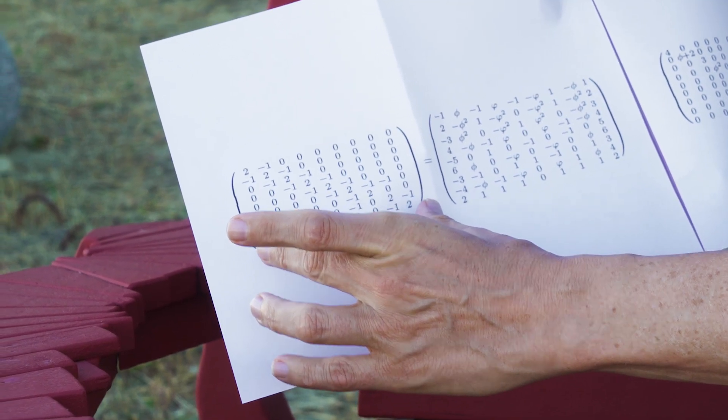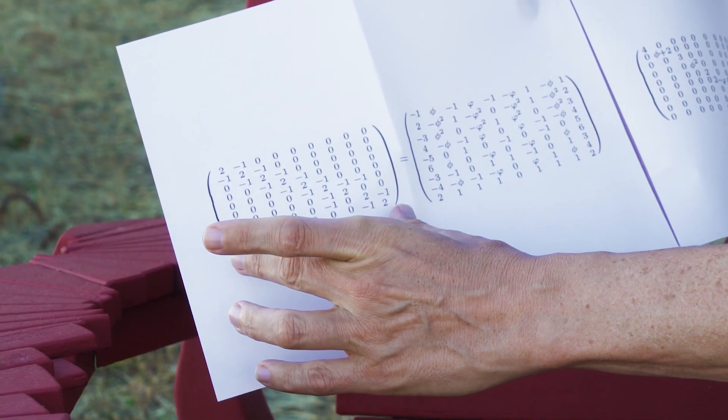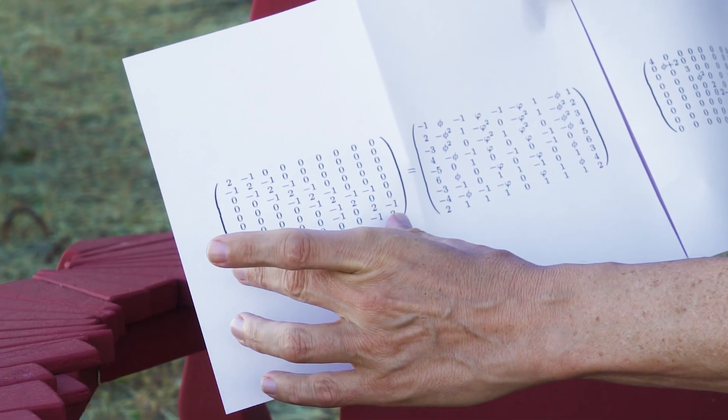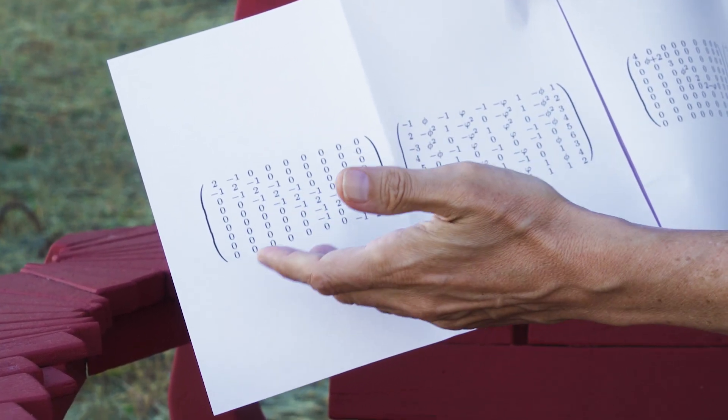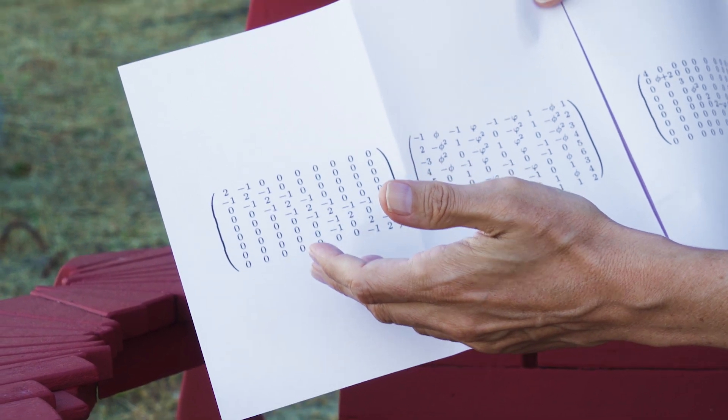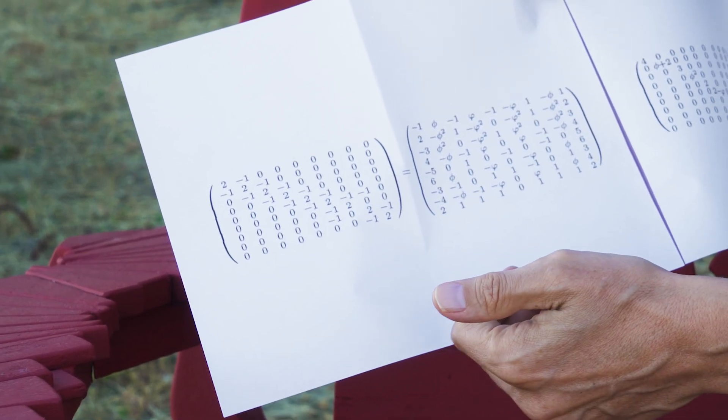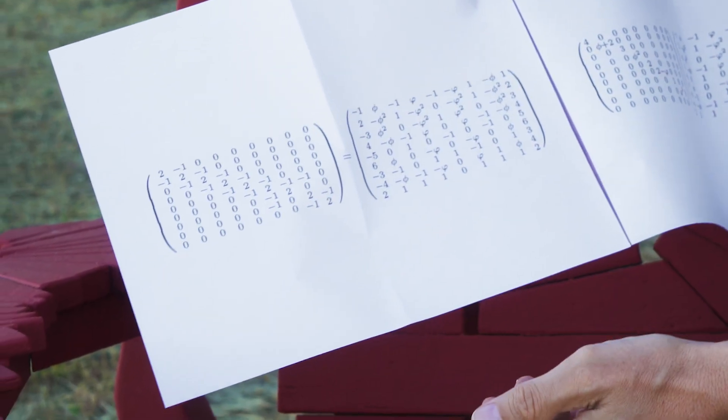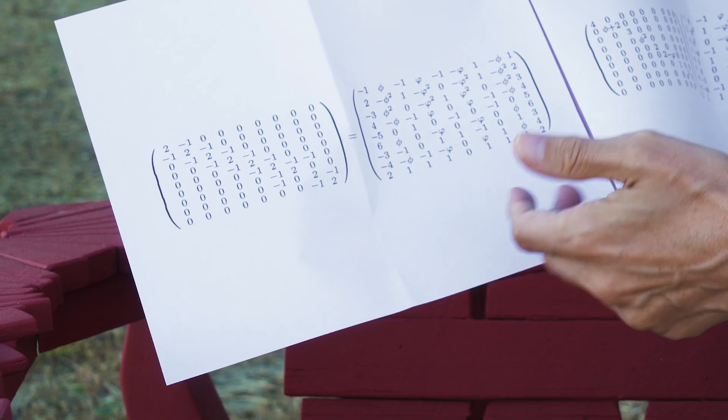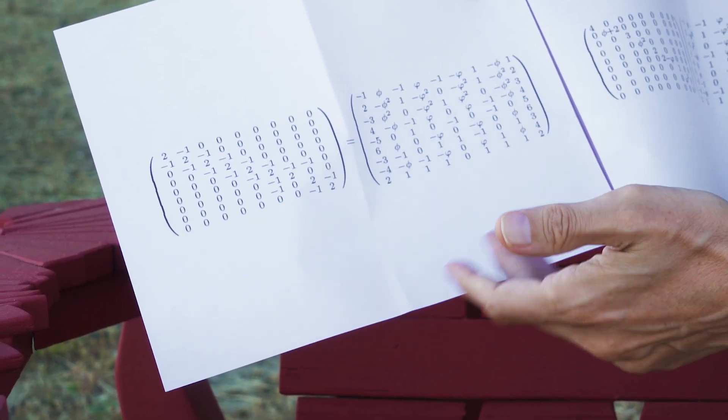So this matrix encodes all the geometry of E8 and it's relatively simple. And when you have a matrix and when you have anything that you want to measure, you have to take the eigenvalue. In fact, the eigenvalues are the key values of any object. And in quantum mechanics, this is what you measure, you can measure the eigenvalues.